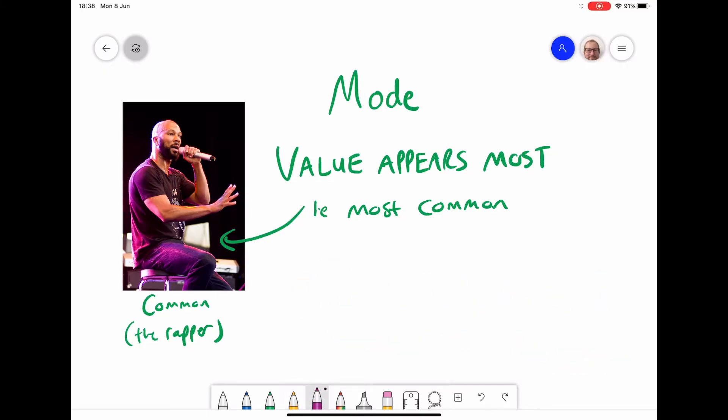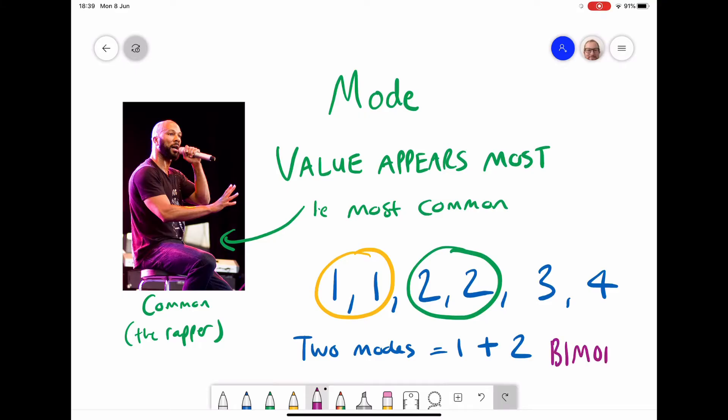The only thing to look out for with modes is that if I had a data set like this, then I have one appearing twice but also two appearing twice. That means I have two modes, and therefore one and two are both the mode, and this is something we call bimodal. You can even get more than—if, say for example, there were three in this set, you would then have three modes and that would be multimodal.